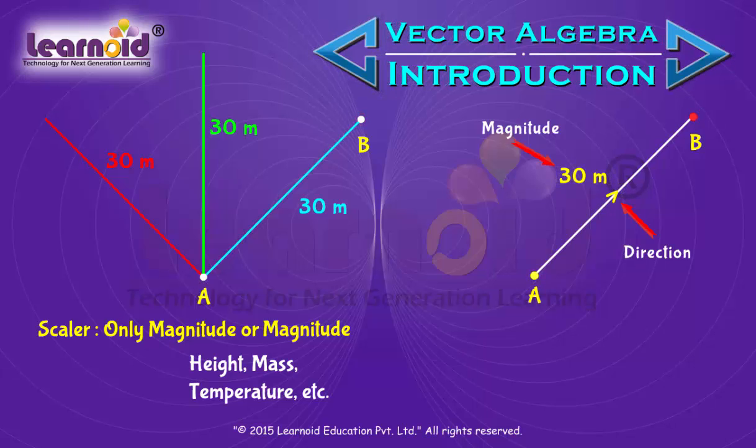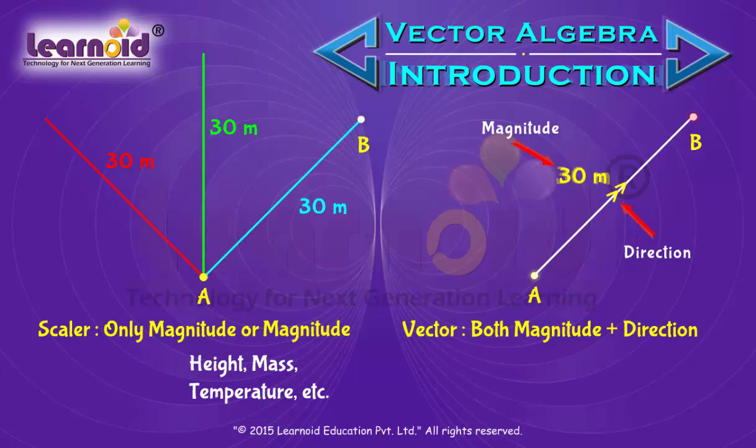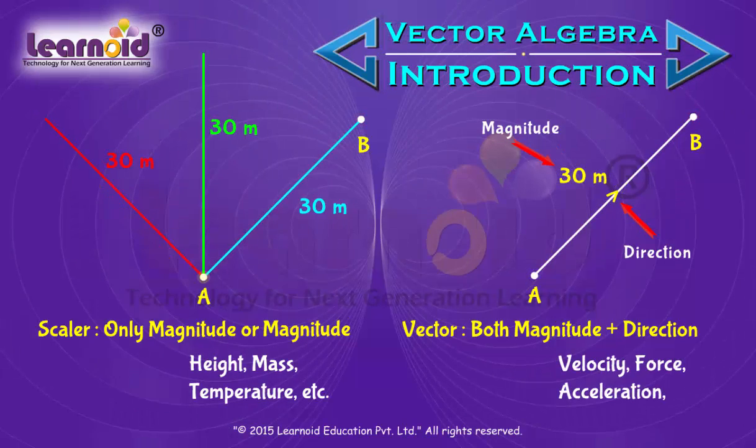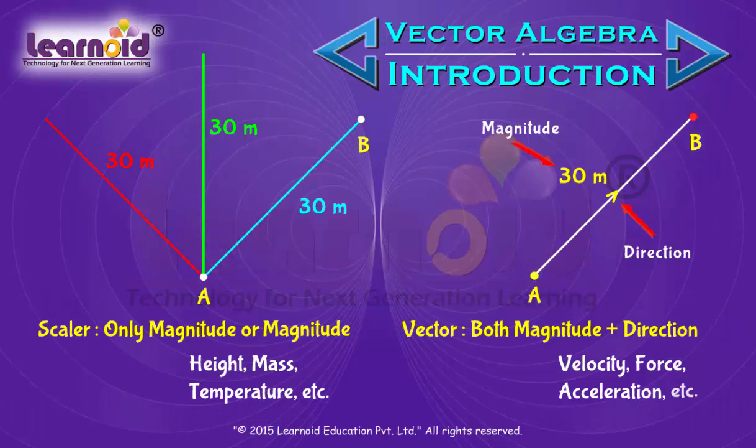The quantities which require magnitude as well as direction are called vector. Quantities such as velocity, force, acceleration, displacement, etc. are vector quantities.